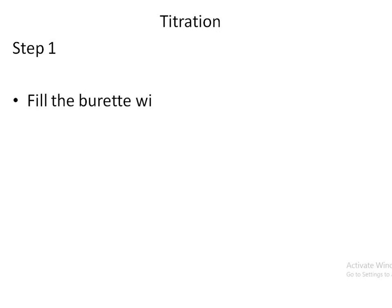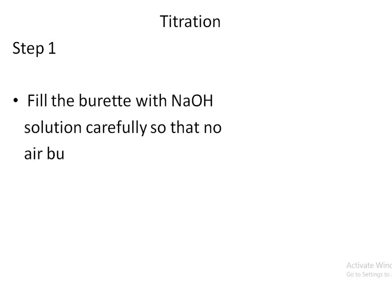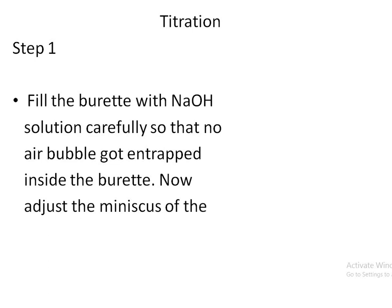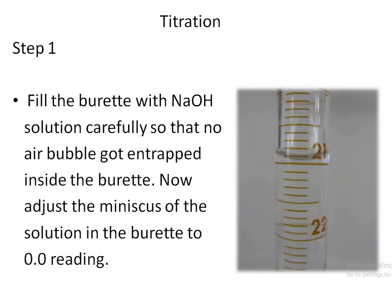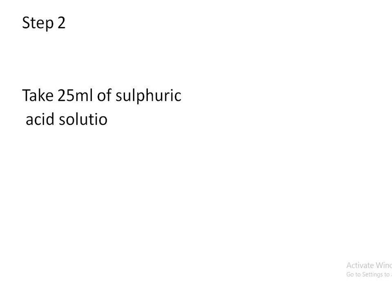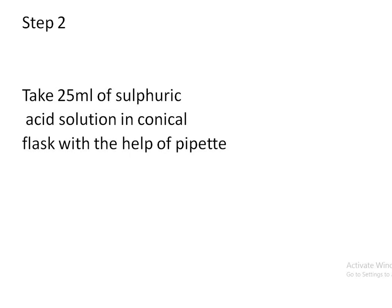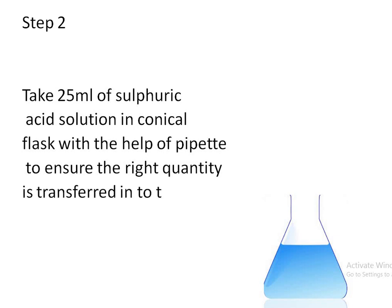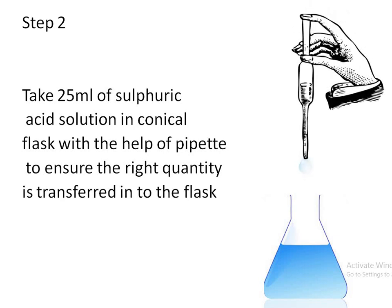Step 1: fill the burette with NaOH solution carefully so that no air bubbles are entrapped inside. Adjust the meniscus of the solution to 0.0 reading — look at the image, we should check the meniscus for 0.0 reading. Step 2: take 25 ml of sulfuric acid solution in a conical flask using a pipette. You can also use 10 ml or 15 ml. Always use a pipette to ensure the right quantity is transferred.